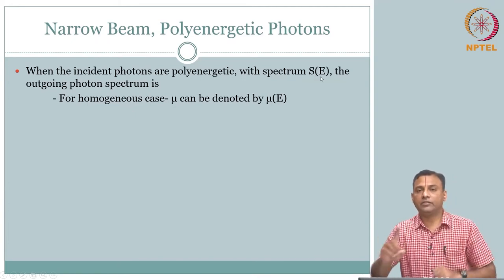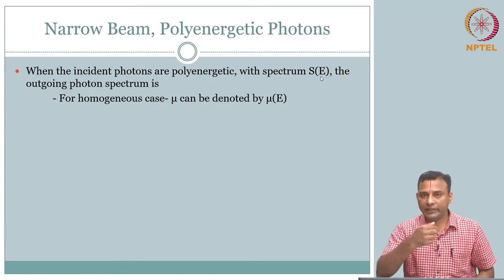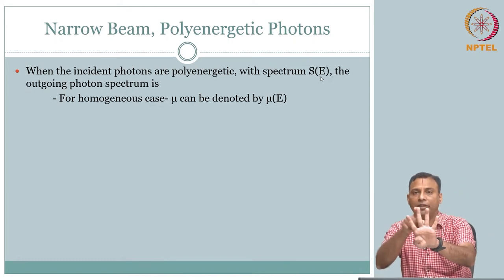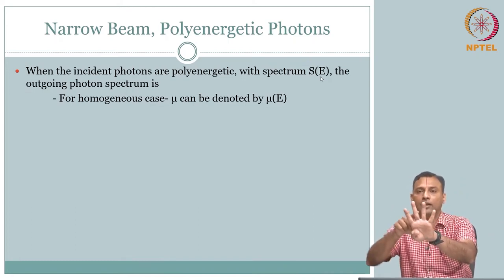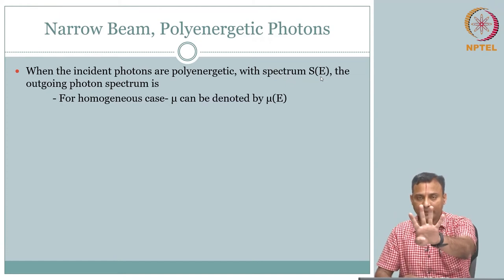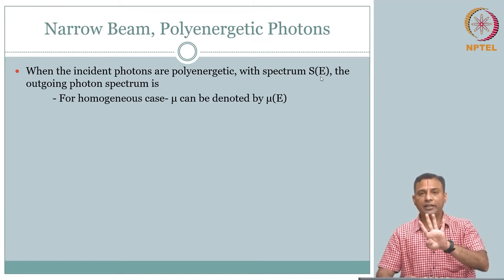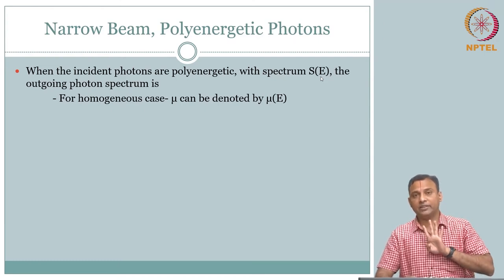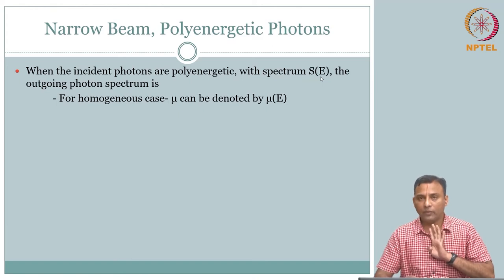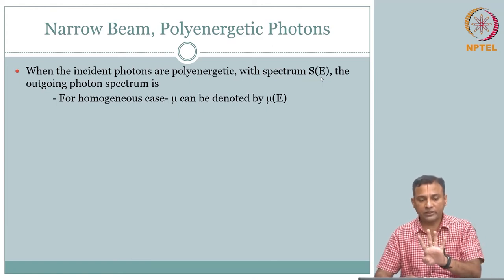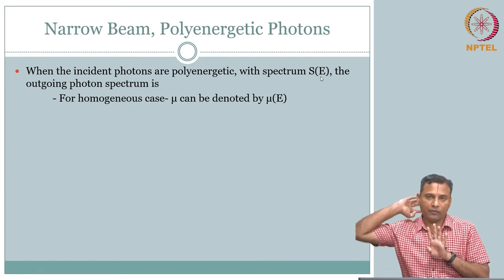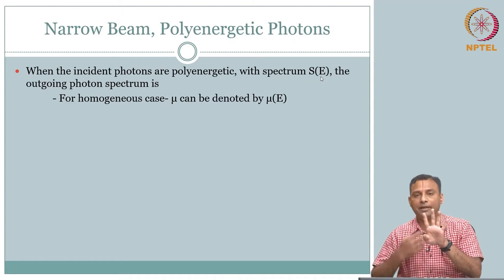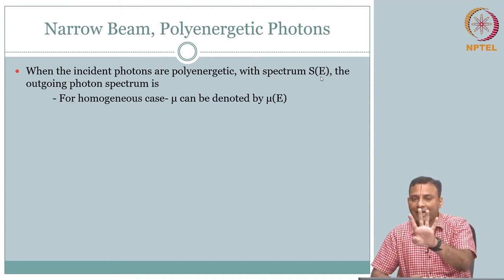Instead of sending one photon with one energy in and receiving it on the other side, now I have a spectrum of energy — N1 photons at one level, N2 photons at another energy level. I am sending this whole spectrum into the body: different energy photons with different numbers at different energy levels. The question is: if this goes in, what is the attenuation? How does the material interact with the spectrum?